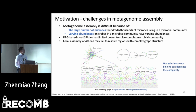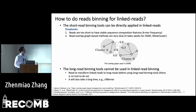In our proposed method, we address this issue by applying read binning to decrease the complexity of the metagenomic dataset before assembly. We considered short-read binning tools, but they cannot work on linked reads because short reads are too short to extract stable sequence features such as k-mer frequency features.